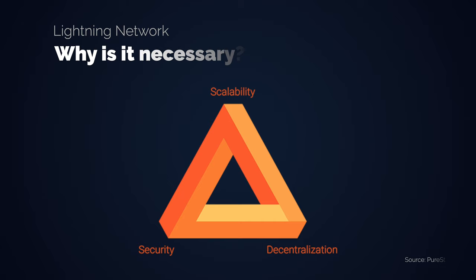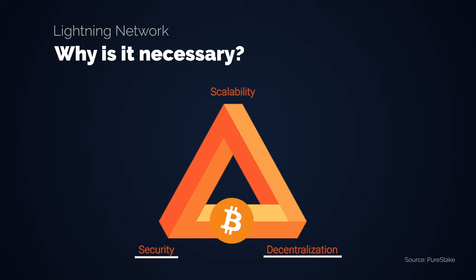The blockchain scalability issue. Every blockchain faces the trilemma of scalability, decentralization and security. It's not possible to optimize all three axes at once. Bitcoin has made the decision to optimize for decentralization and security. These features are absolutely crucial for Bitcoin to be a censorship resistant network with unchangeable rules with the least attack vectors possible.